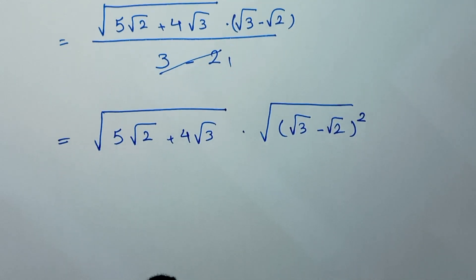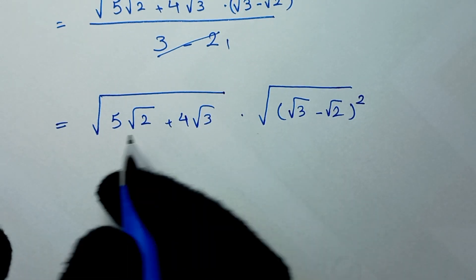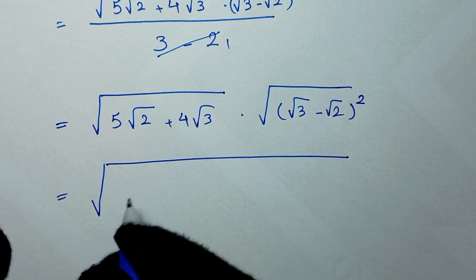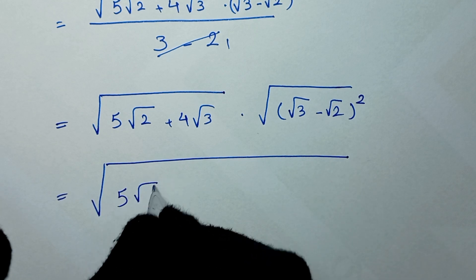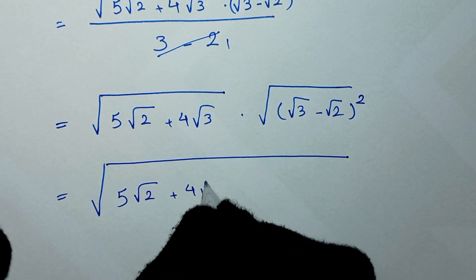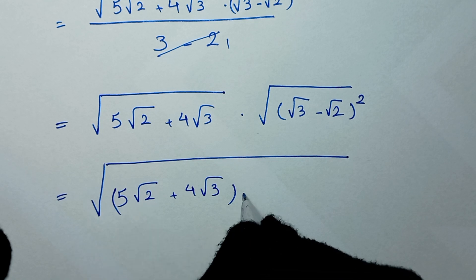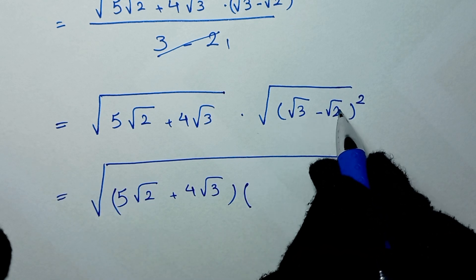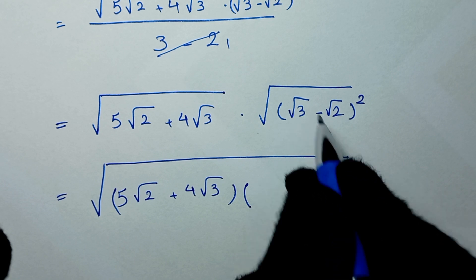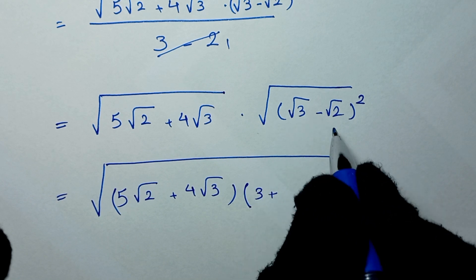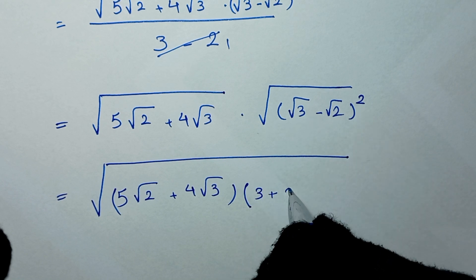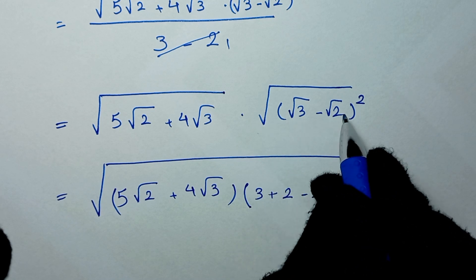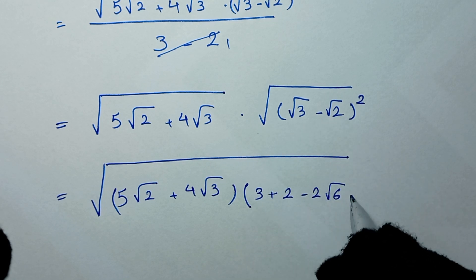We can write this as square root of: 5 square root of 2 plus 4 square root of 3, times square root of 3 minus square root of 2, to the power of 2. Expanding (√3 - √2)²: square root of 3 to the power of 2 is 3, plus square root of 2 to the power of 2 is 2, and minus 2 times square root of 3 times square root of 2, which is square root of 6.